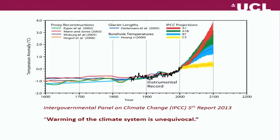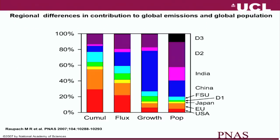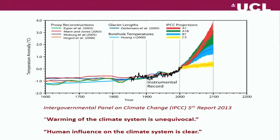Of course, warming of the climate is something we're faced with as well. This shows increasing global temperature. These projections come from the Intergovernmental Panel on Climate Change, based on different scenarios. The IPCC — a group of 500 or more scientists who try to work out what's happening to the climate system — recently produced their fifth report, and the conclusions are quite blunt.